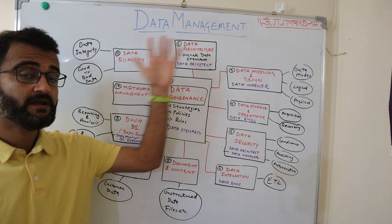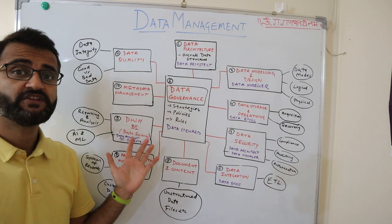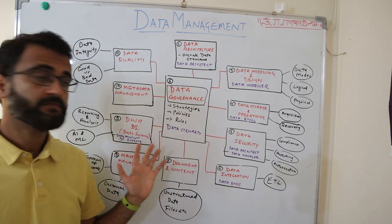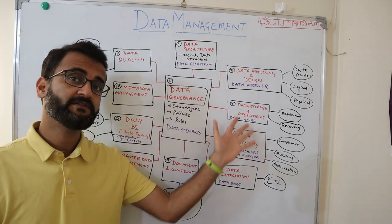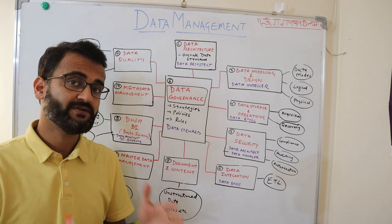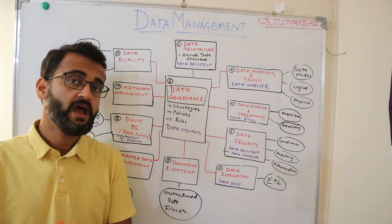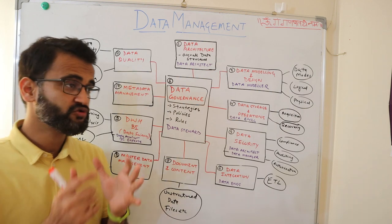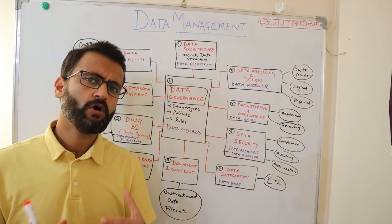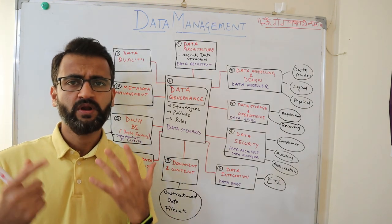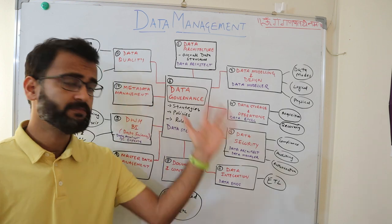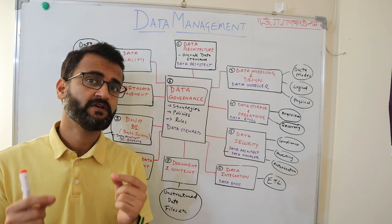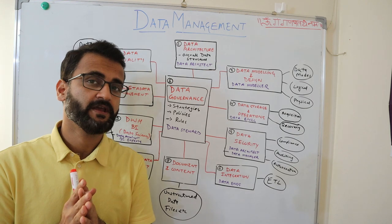Here are the 11 data management areas depicted in this pattern. We'll go through each and every area one by one and quickly understand what exactly that area does, along with some key roles in the IT industry which belong to that specific area. Although many roles exist and one role can span across multiple areas, we will try to identify certain specific roles which fall into one particular area.